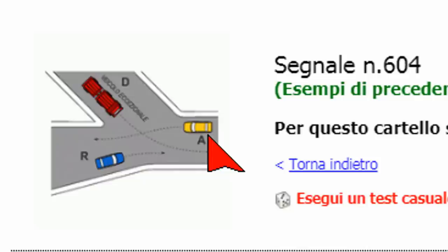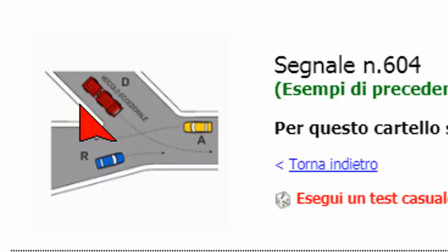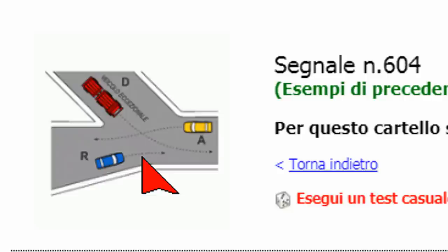Iniziamo dal veicolo giallo. Se siamo alla guida del veicolo giallo, la destra è rappresentata da quel tratto di strada da cui sopraggiunge il veicolo rosso D. Quindi il veicolo A deve dare precedenza alla sua destra al veicolo D. Il veicolo D ha a destra il veicolo blu R. Il veicolo blu invece ha a destra una strada inesistente: la sua destra è di fatto libera.